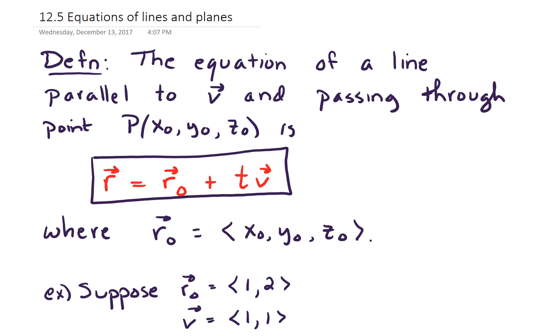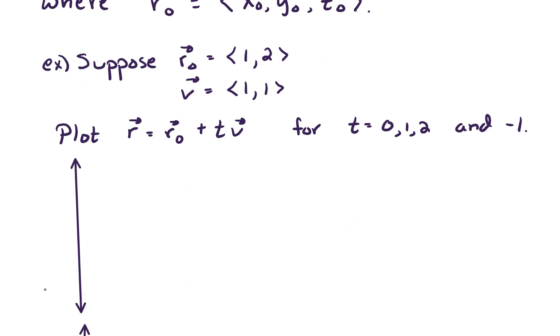So to get a sense of how this works, let's look at an explicit example and then we'll move on to generalize this. Suppose that R0 is equal to the vector <1,2> and V equals the vector <1,1>. Let's plot R, the resulting vector, from adding R0 plus T times V.